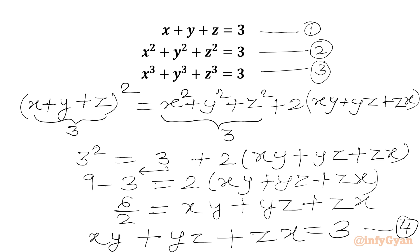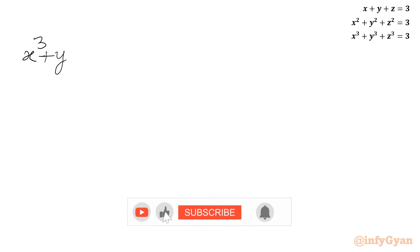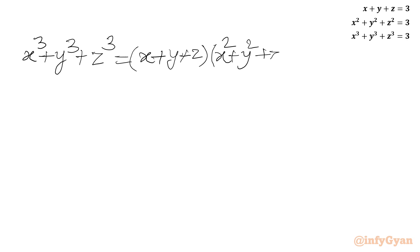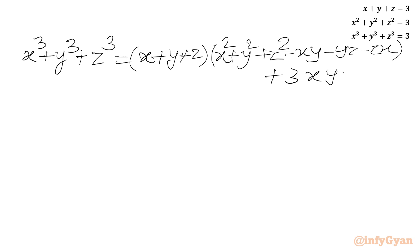Now we are going to use another very interesting identity from algebra. I will write x cubed plus y cubed plus z cubed. This equals x plus y plus z times the bracket x squared plus y squared plus z squared minus xy minus yz minus zx. This is one algebraic identity.